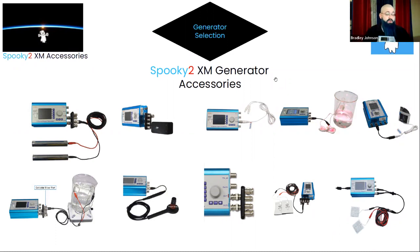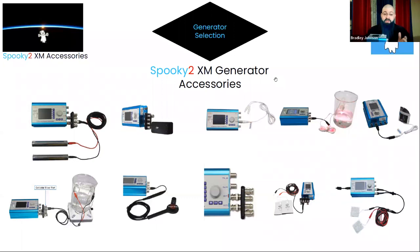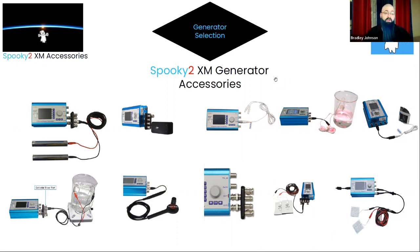You can also use the XM Generator for making colloidal silver with the colloidal silver kit. Another favorite is the PEMF coil — using the booster with it unlocks the full potential of the frequency databases. You can imprint frequencies directly into distilled water solutions, essential oils, or carriers for topical application. Because they absorb quickly, those frequencies absorb into the skin and work very effectively.